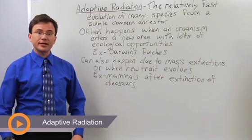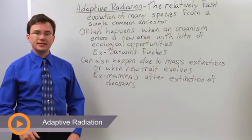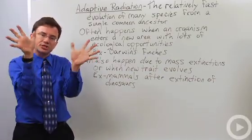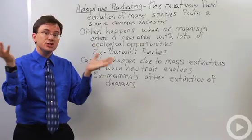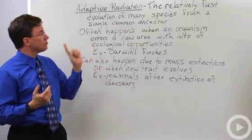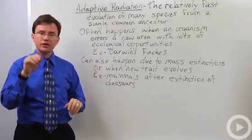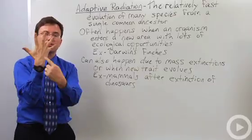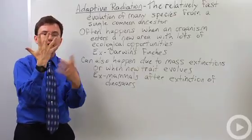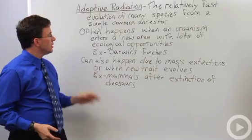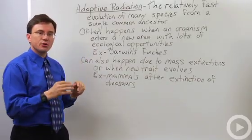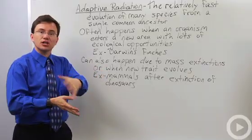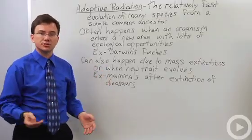In evolution, adaptive radiation is the idea that you have this relatively rapid or fast expansion to the development of many new species coming from one original common ancestor. They call it radiation because the species, if you're drawing a diagram, radiates out from our common ancestor. One very common way for this to happen is when an animal moves into a new area that has lots of new ecological opportunities.